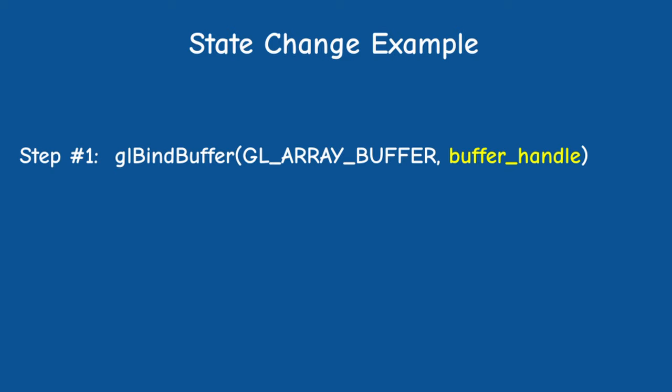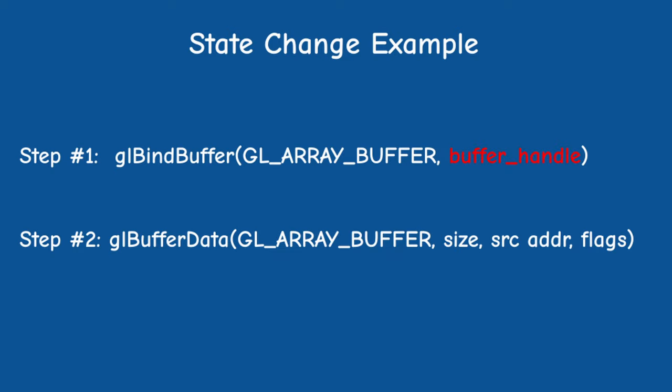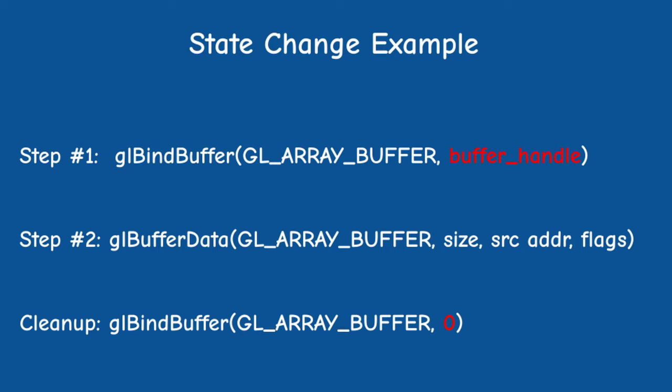For example, if you want to load vertices into a vertex buffer, you have to bind it to the glArrayBuffer binding point and then you can call glBufferData to do the actual update. The problem here is that you need to be very careful when updating objects and clean up after yourselves and keep the state correct for the following draw call.